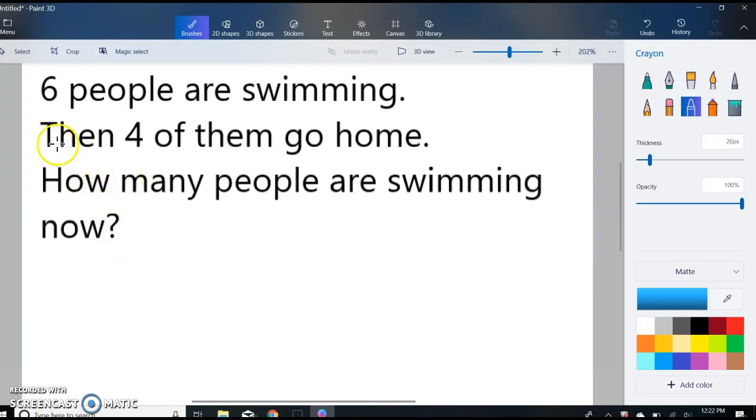The first thing we have to do is read our word problem first and foremost, always. So our word problem says: six people are swimming. Then four of them go home. How many people are swimming now?